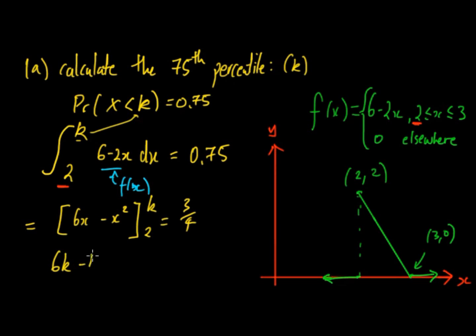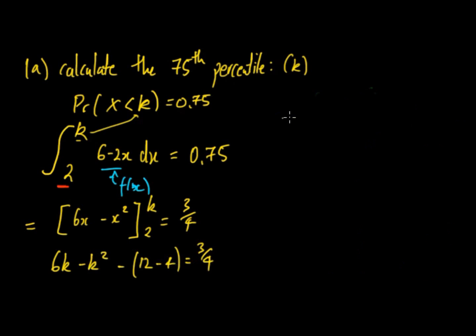6k minus k squared minus 12 minus 4 is equal to 3 on 4.